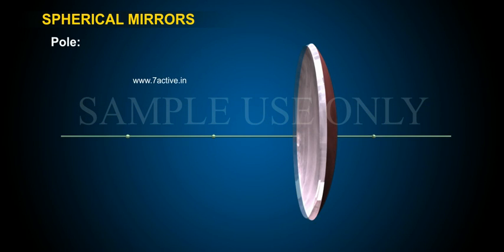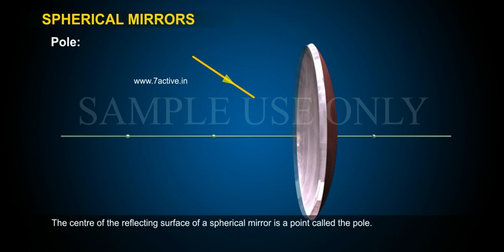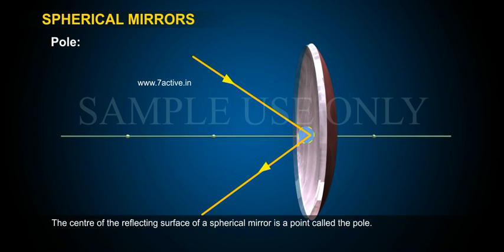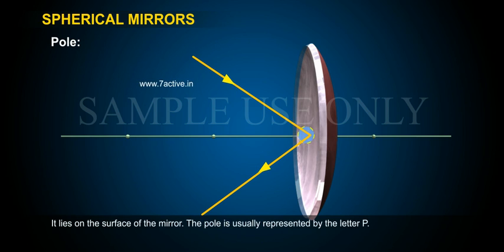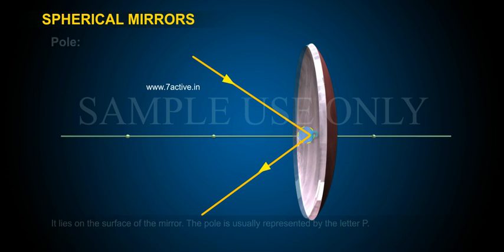Pole. The centre of the reflecting surface of a spherical mirror is a point called the pole. It lies on the surface of the mirror. The pole is usually represented by the letter P.